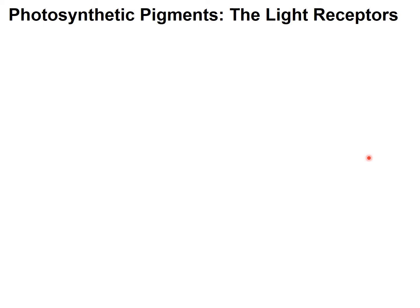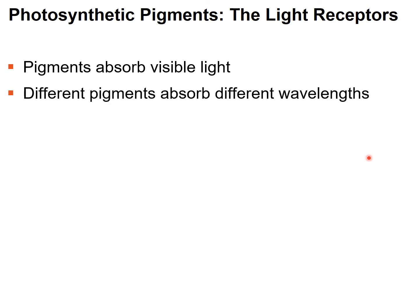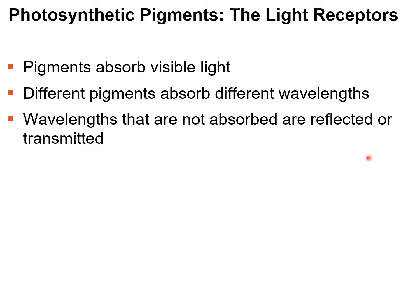Inside plants there are pigments — like chlorophyll and others — that act as receptors, detecting and absorbing visible light. Different pigments absorb different wavelengths. The wavelengths that are not absorbed by the pigment are reflected or transmitted — and it's this reflected or transmitted light that we actually see.